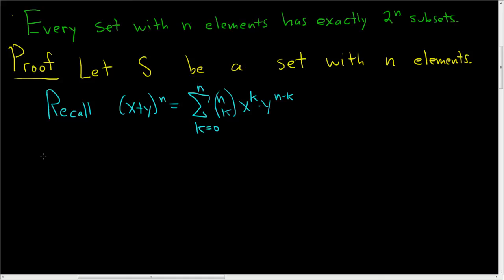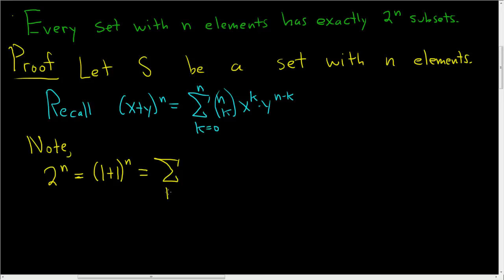Let's go back to the proof. Note, if we look at 2 to the n — well, 2 is equal to 1 plus 1 — so this is (1 + 1) to the n. Now we can invoke the power of the binomial theorem. So this is the sum as k runs from 0 to n of n choose k.